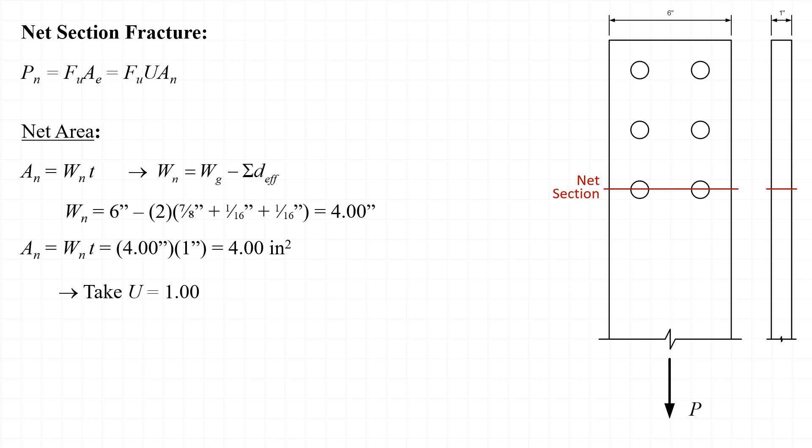So, taking U equal to one and substituting into our equation for the effective net area A sub e, we see that the effective net area, in this case, is equal to four inches squared.